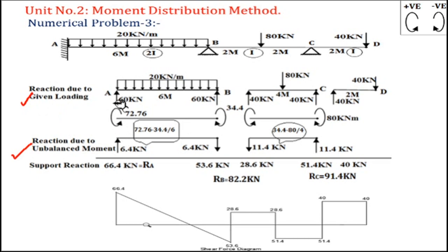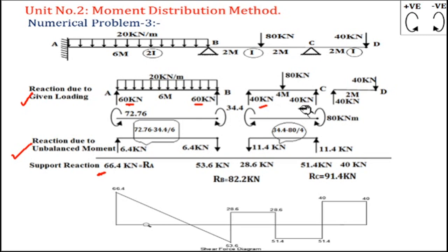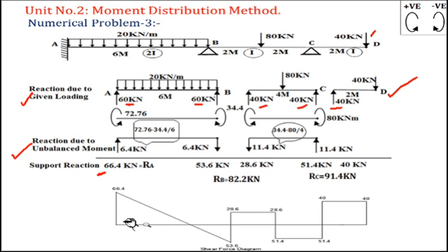For shear force due to loading: for UDL, take 20 × 6 / 2 = 60 kN upward. For the point load of 80 kN divided by 2, reaction at B and C becomes 40 kN. There is a reaction of 40 kN at D, so there is an upward reaction of 40 kN at C. This gives the reactions due to the given loading. Draw the free body diagram for each span; our interest is in the reactions for the shear force diagram.